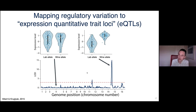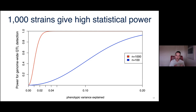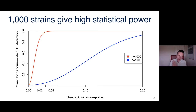We repeat this process for every gene we've measured. We used a thousand individuals because we knew that would give us high statistical power to detect eQTLs, which tend to have fairly small effects.